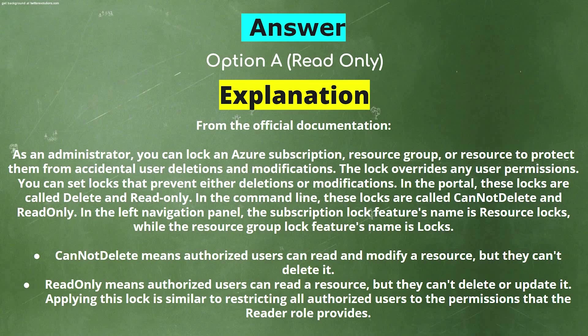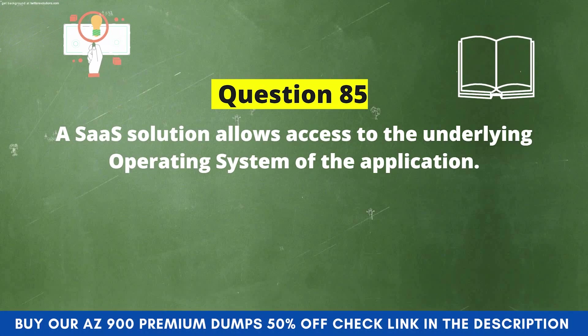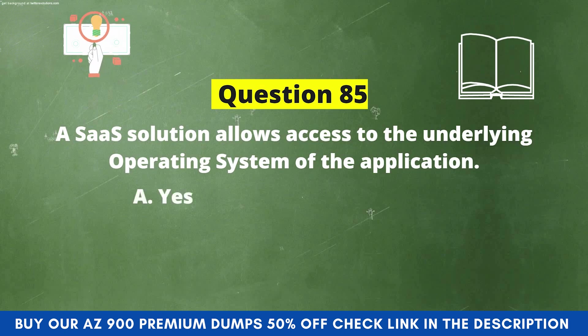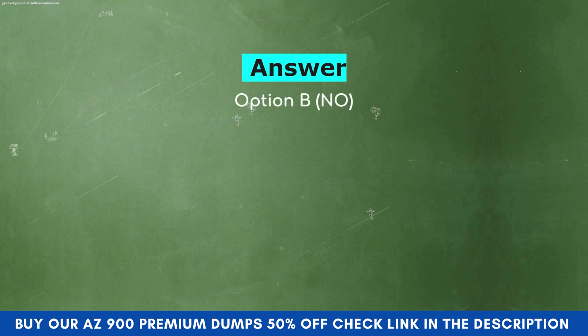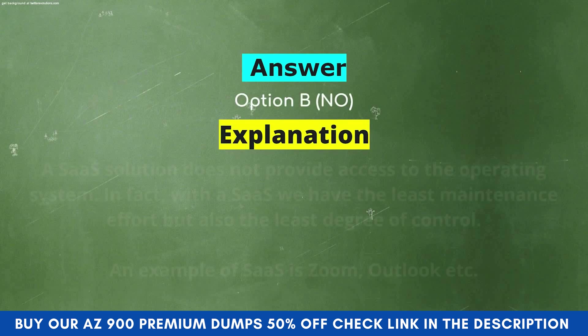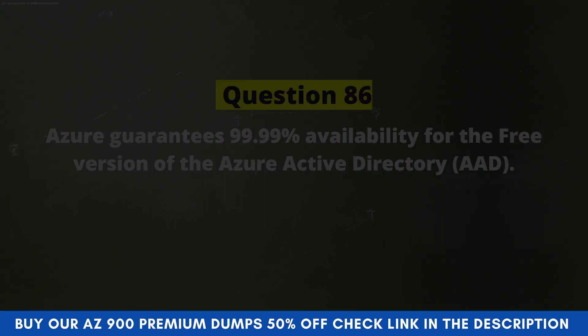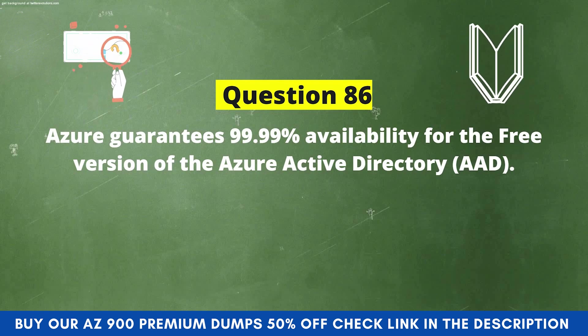Next question: Does a SaaS solution allow access to the underlying operating system of the application? Option A: Yes. Option B: No. The correct answer is Option B, No. Explanation: A SaaS solution does not provide access to the operating system. With SaaS we have the least maintenance effort but also the least degree of control. Examples of SaaS include Zoom and Outlook.